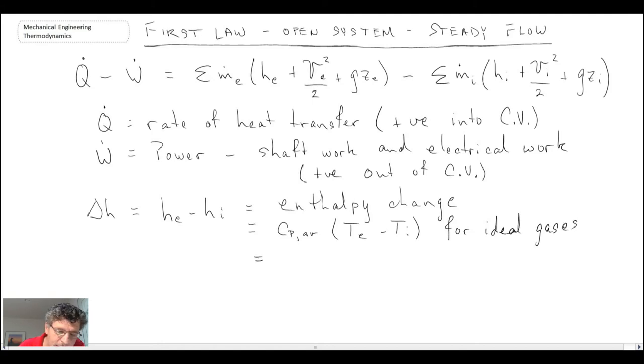If you're dealing with the problem using either refrigerant or steam, use the tables from the back of the book. So I should say here, this is for delta T less than 200 degrees C. Steam, R134A, use tables.